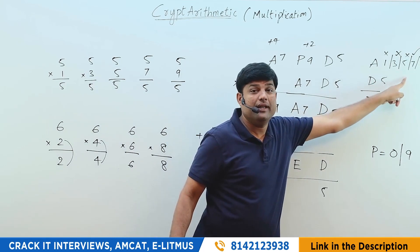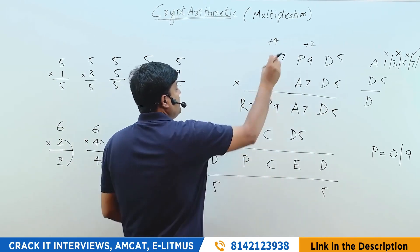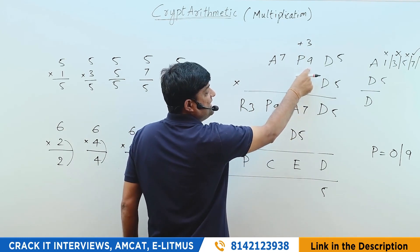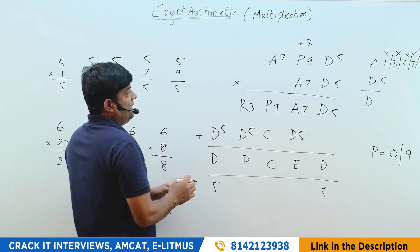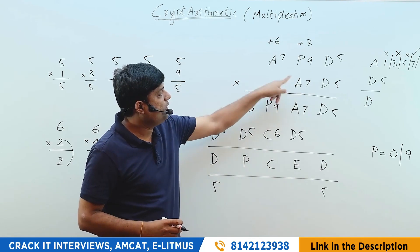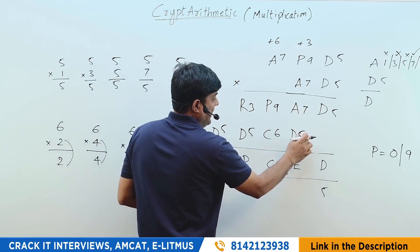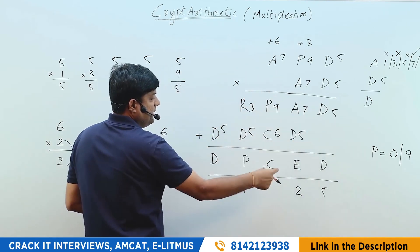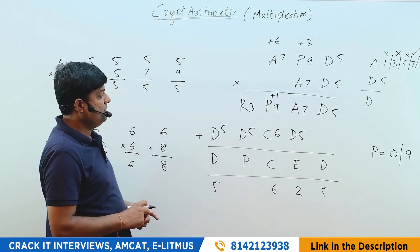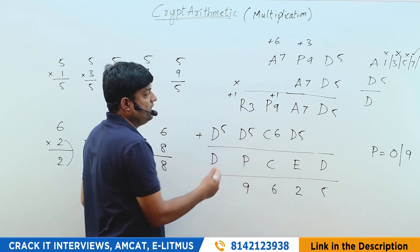Now for the second row of multiplication: 7×5=35, write 5 carry 3. 7×9=63, plus 3 = 66, write 6 carry 6. 7×7=49, plus 6 = 55 — perfectly matching. Then in the addition step: 7+5=12, carry 1. 9+1=10, plus 6 = 16, carry 1. No issues there — 5+3=8, plus 1 carry = 9, perfectly matching throughout.